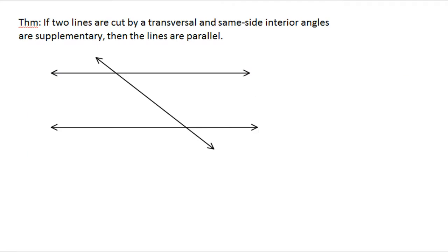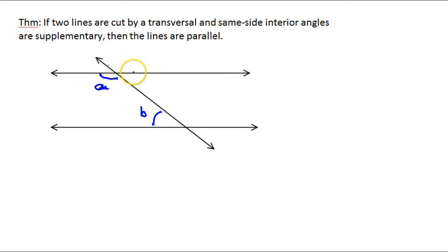Our next theorem: if two lines are cut by a transversal and same side interior angles are supplementary — so if I'm given that angle A and angle B are supplementary, then the lines are parallel. Here's what we would do: angle A is supplementary to angle C because they form a straight angle. Angle C and angle B are alternate interior angles, so they're congruent. And by the theorem we just learned, if alternate interior angles are congruent, then the lines are parallel.